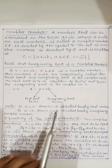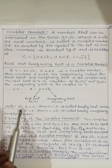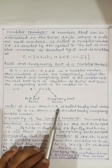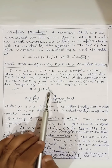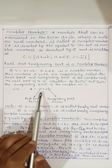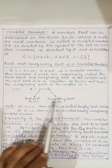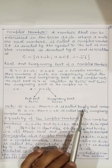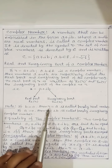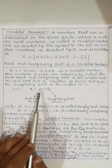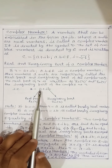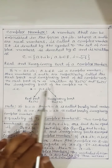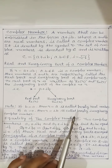Note: if b = 0, then z = a, which is called a purely real number. And if a = 0, then z = ib, which is called a purely imaginary number.